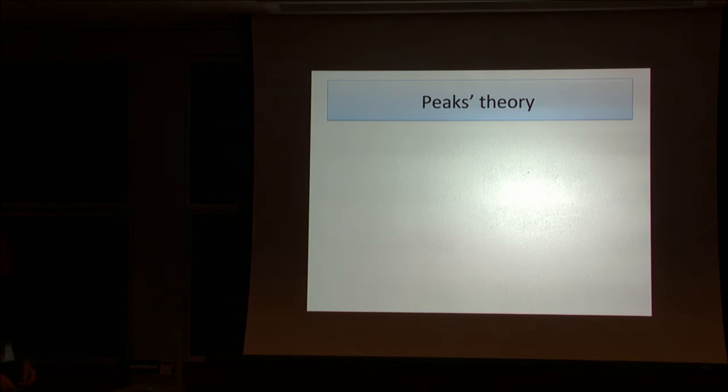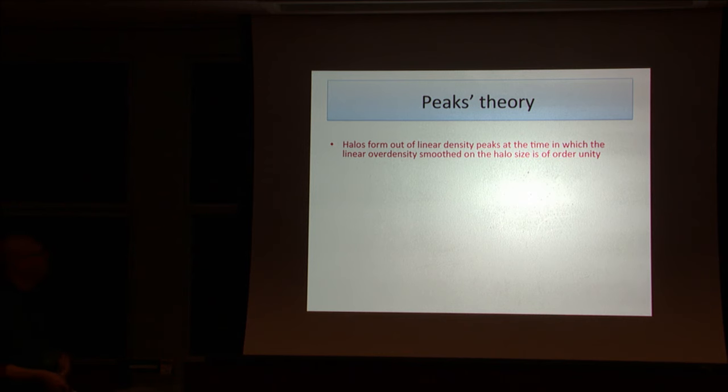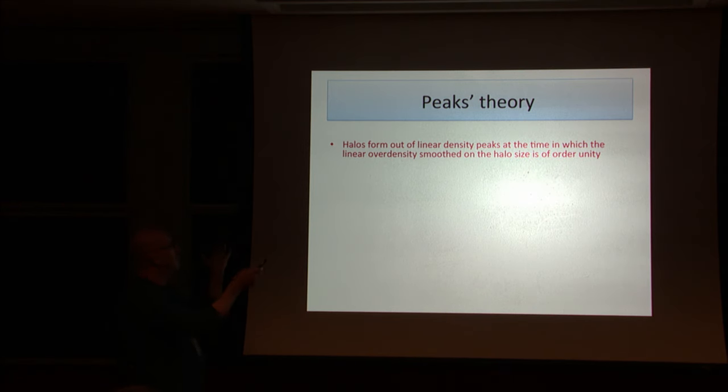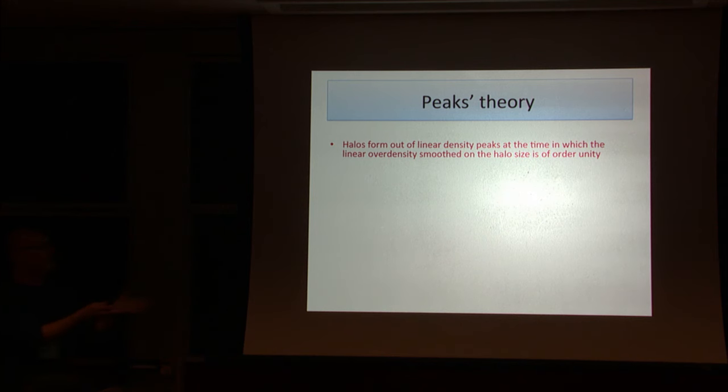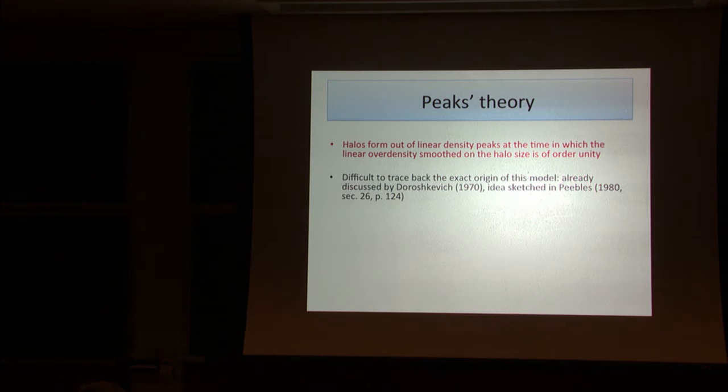So I'll start. You heard a lot about the theory, so let's summarize what it says. Essentially, halos form out of linear density peaks at the time in which the linear overdensity smoothed on the halo's scale toward unity. Now, if you try to trace this back in the literature, it's not that easy to understand where it came from. It's already in Doroshkevich '70, and there's an entire page in Peebles '80 that describes the process.